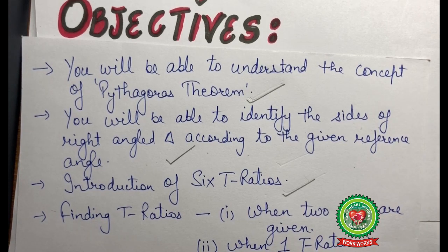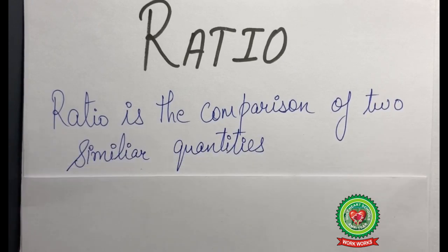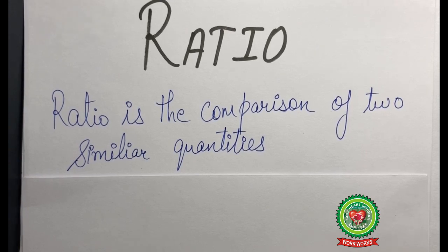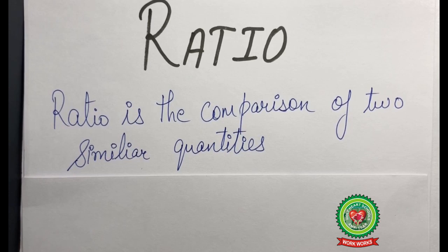What is a ratio? A ratio is the comparison of two similar quantities. You need to remember that comparison is only possible when the quantities are of similar nature, that is they should have the same units. If the units are not the same, comparison is not possible. Now here we are talking about trigonometrical ratios. Trigonometry is the branch of mathematics that deals with the relationship between the sides and the angles of a triangle, specifically the right-angled triangle.